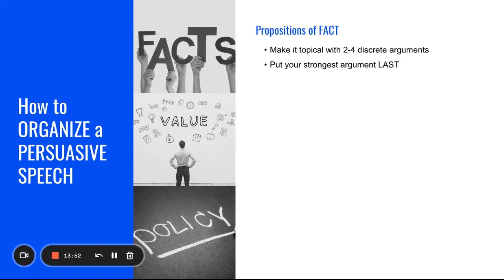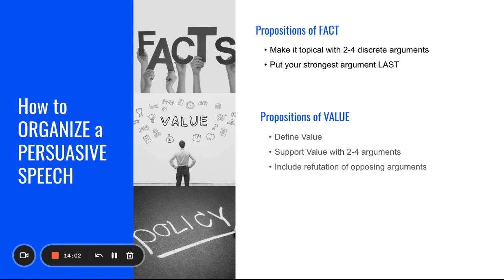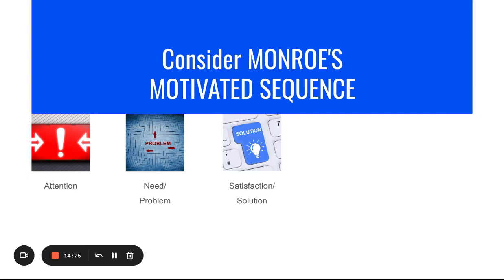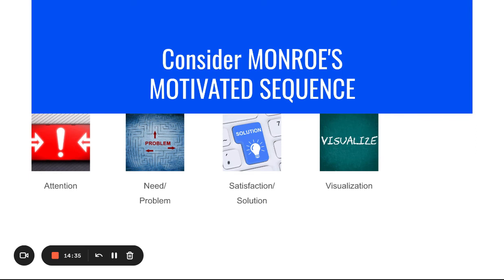To organize a persuasive speech: for propositions of fact, use a topical organization with two to four discrete arguments, putting your strongest arguments last for memorability. For propositions of value, define the value, support it with two to four arguments, and include refutation of opposing arguments. For propositions of policy, consider the problem-solution or problem-cause-solution organizational pattern, and consider Monroe's motivated sequence: get the audience's attention, establish a need or problem, satisfy that need, have them visualize success, and tell them how to take action.